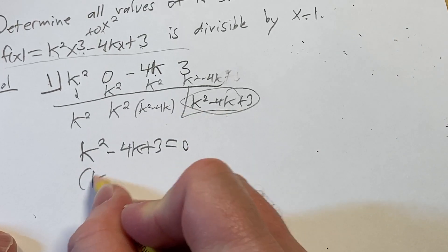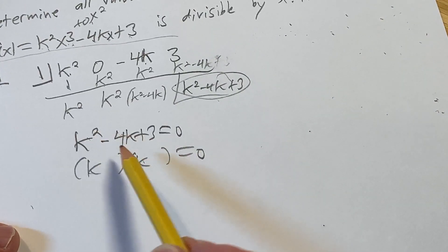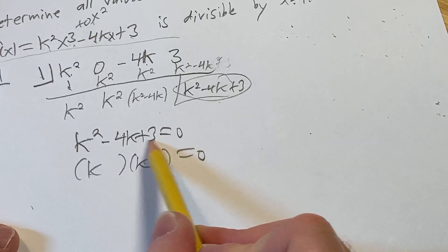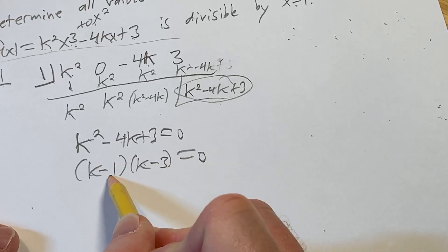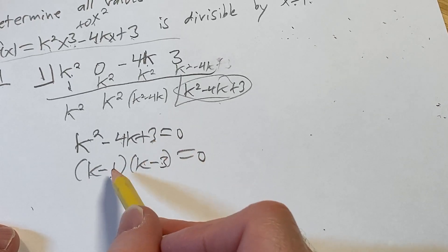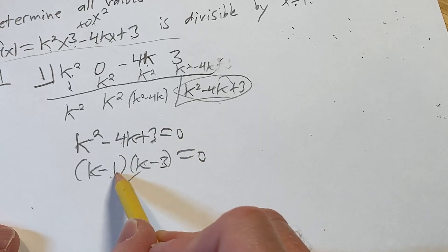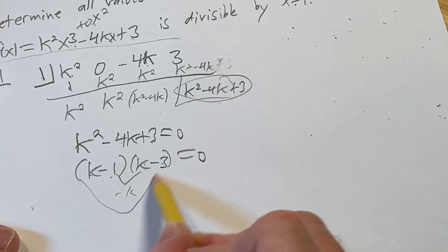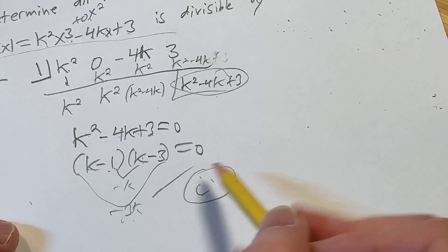We can factor this simply by guessing. Notice k times k is k squared. We need two numbers that multiply to 3 and add to negative 4. That's going to be negative 1 and negative 3 because negative 1 times negative 3 is positive 3. And the inner terms, the inner negative k minus 3k, you add these, you're going to get negative 4k. So everything works out beautifully.